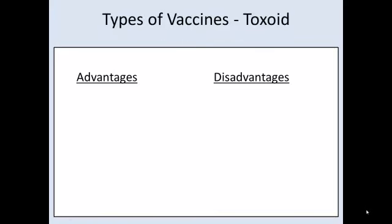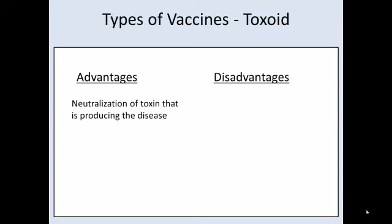On to toxoid vaccines. We use these for diseases not caused by the pathogen replicating in you, but by toxins the pathogen produces. Examples are tetanus and diphtheria — it's the production of the toxin that causes the disease. So we take the toxin, inactivate it with formalin, inject it, and you produce neutralizing antibodies to the toxin. Then you don't get sick when exposed to bacteria producing the toxin, and you're able to fight off the replicating bacteria without becoming ill from the toxin. Generally, these don't require refrigeration, and there are really no significant disadvantages since toxoids are used specifically for that purpose.